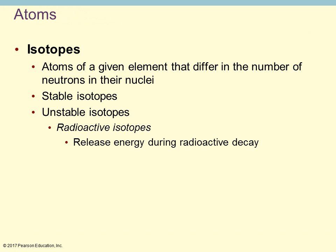Isotopes are atoms that have a different number of neutrons in the nucleus. You have stable isotopes and unstable isotopes. The unstable ones are radioactive isotopes — as they naturally decay, they release radioactive energy that can be measured.